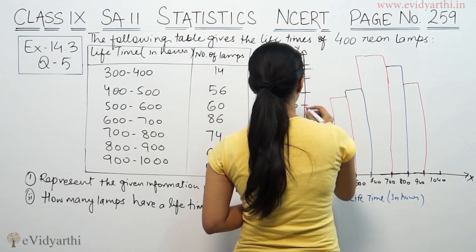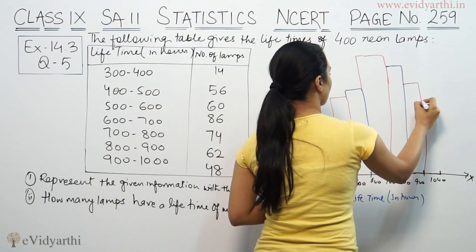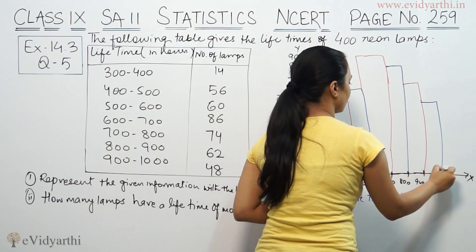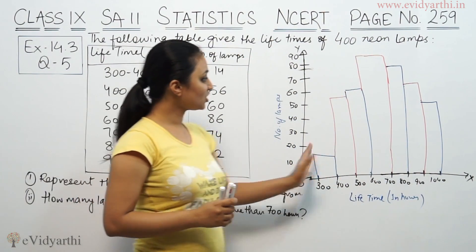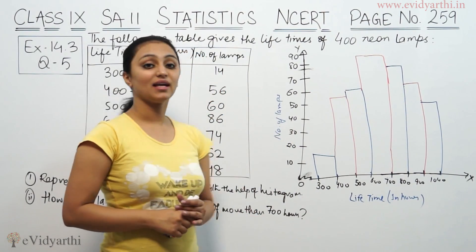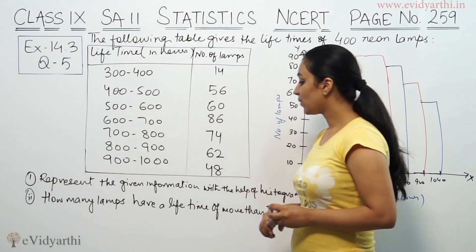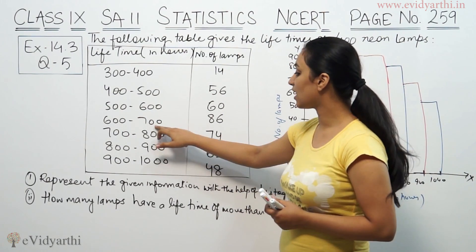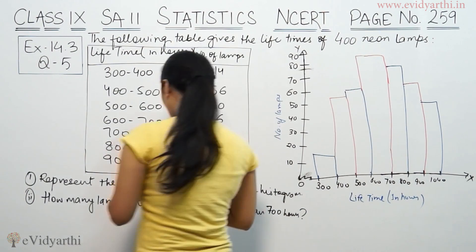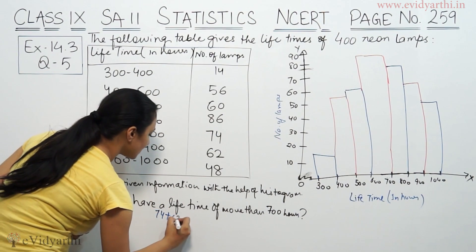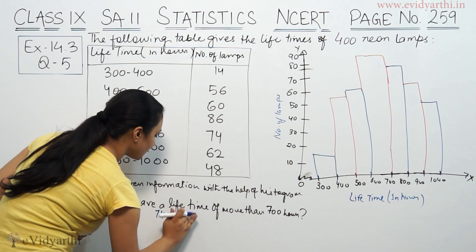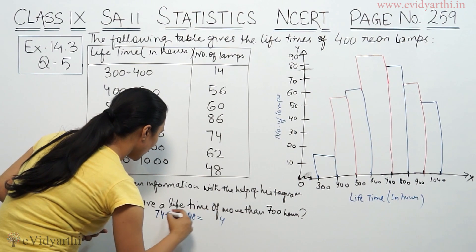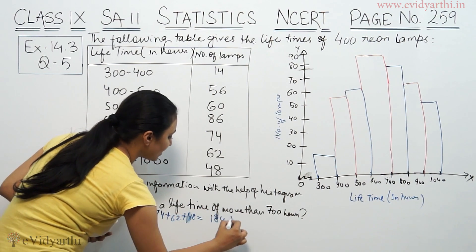And 900 to 1000 is 48. So the bars represent 14, 36, 60, 86, 74, 62, and 48 lamps respectively, totaling 400 lamps.